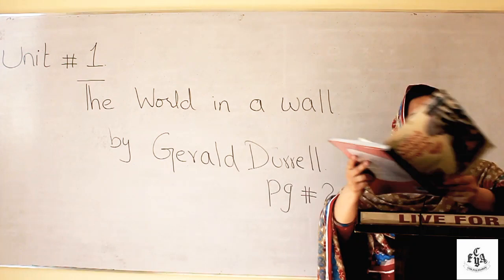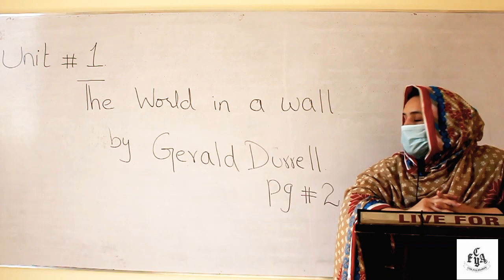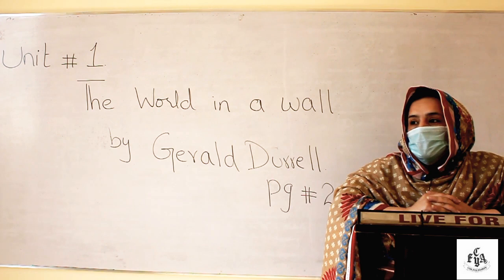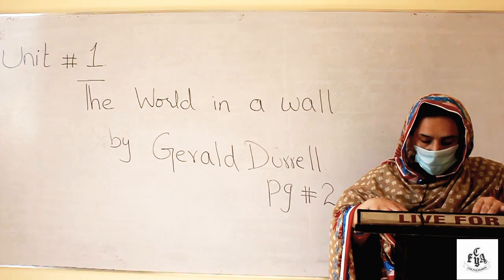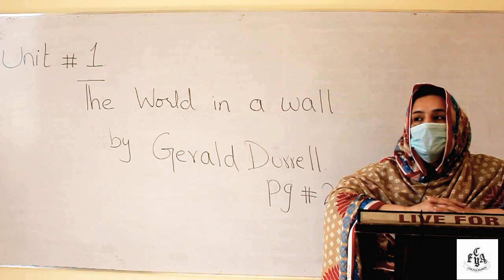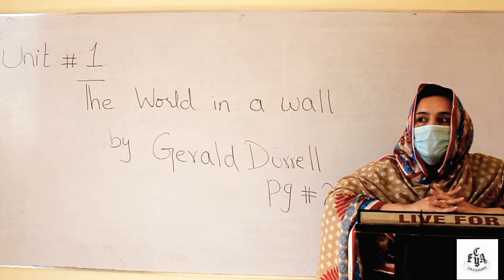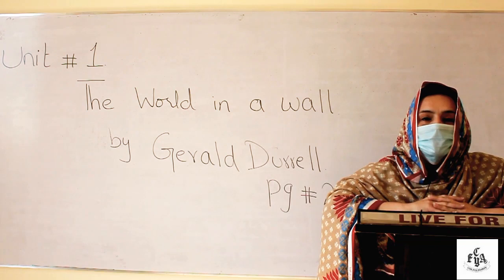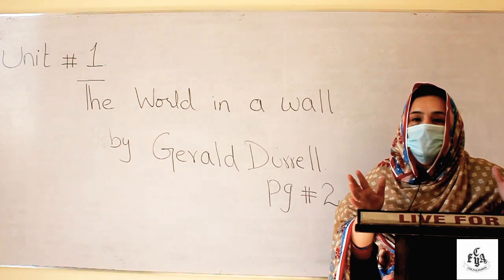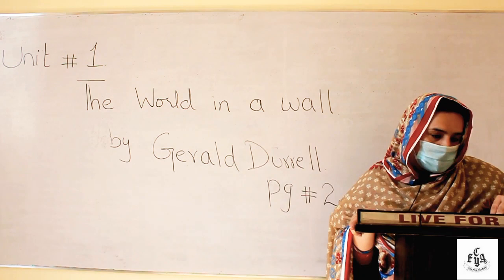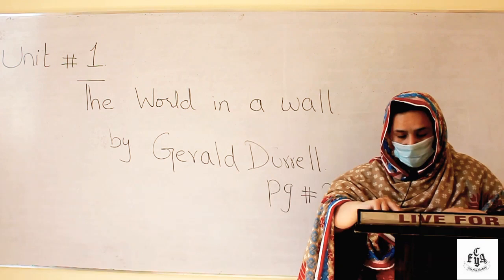The very first topic is about 'The World in a Wall' by Gerald Durrell. Gerald Durrell was an English naturalist, a zookeeper, an author, and a television presenter. He was very much famous for his love for animals and wrote about thirty-three books on animals, especially about his knowledge, study, observation, and experience regarding wild animals.